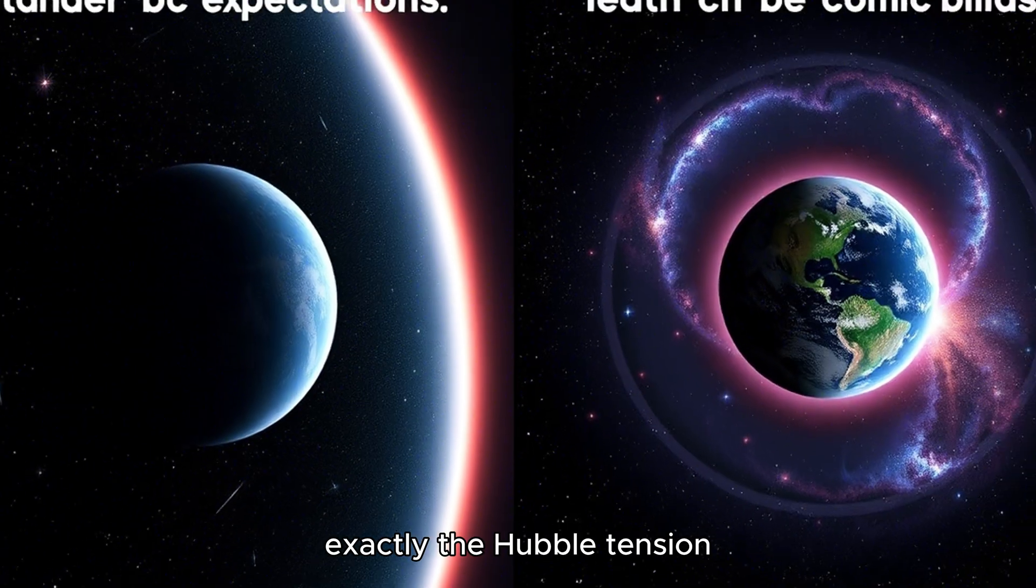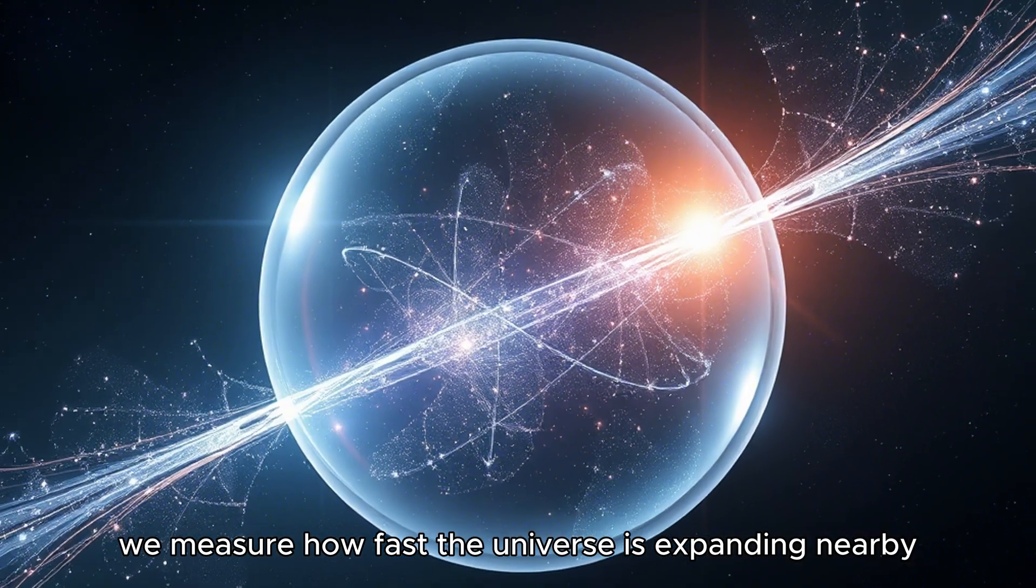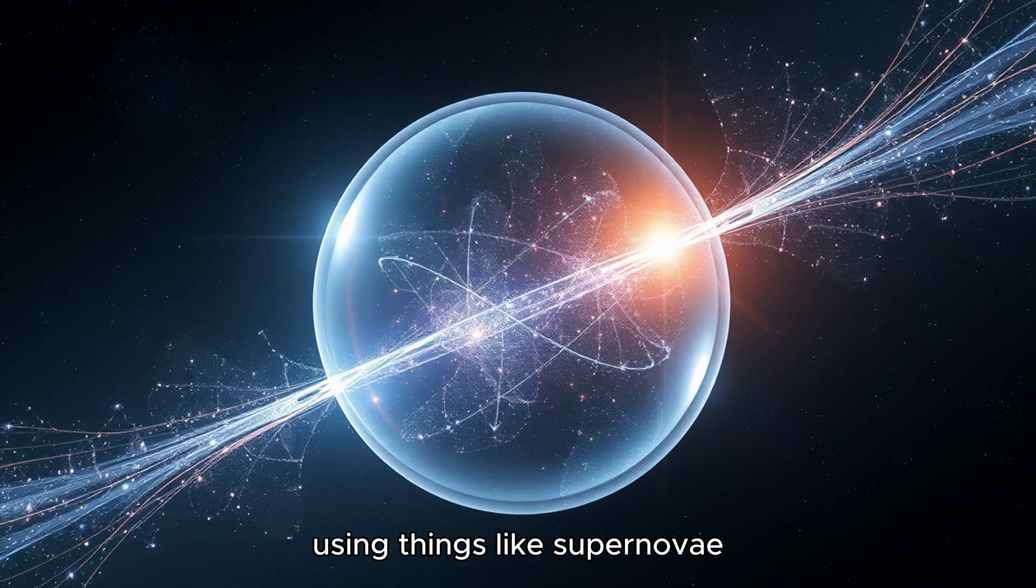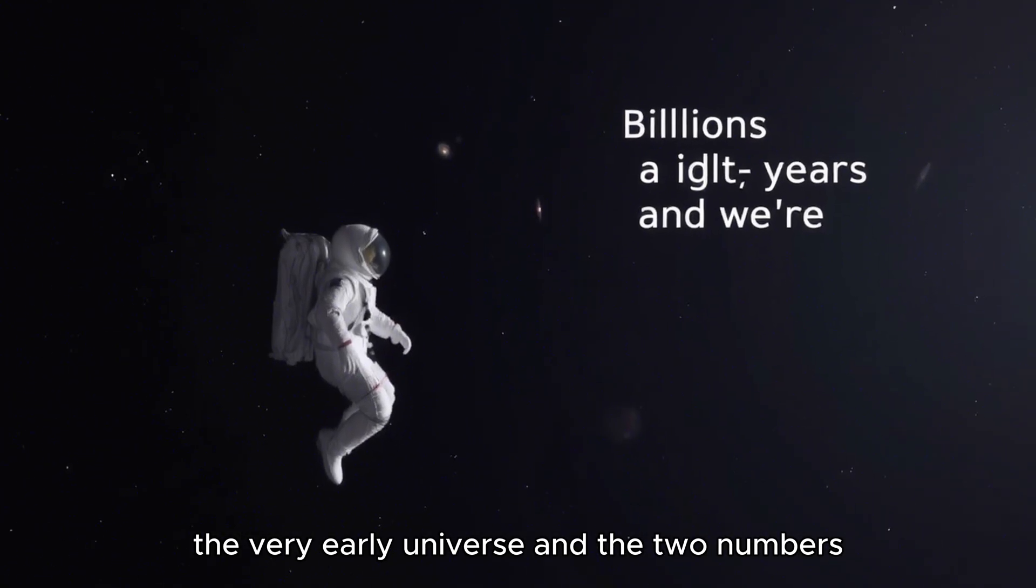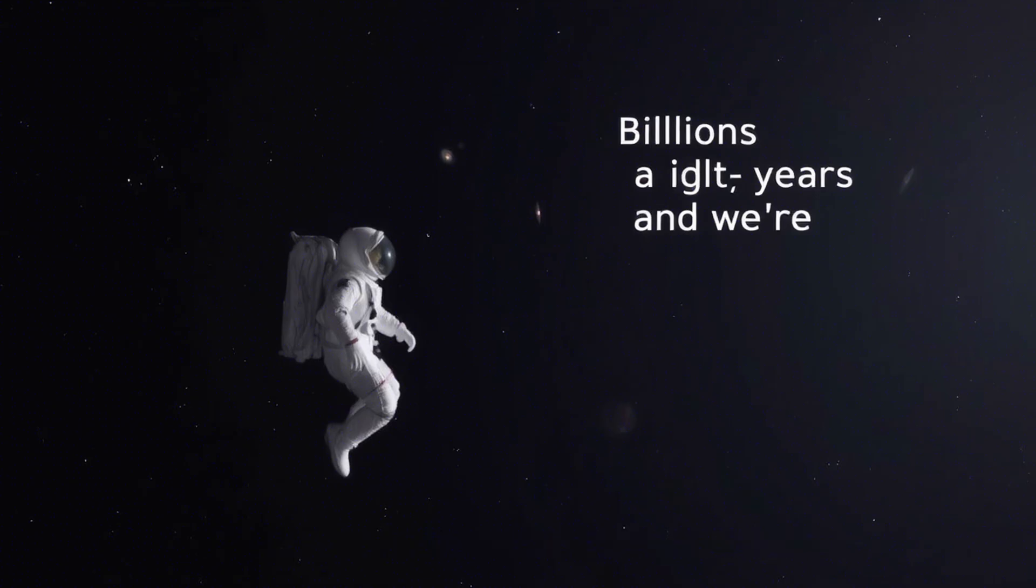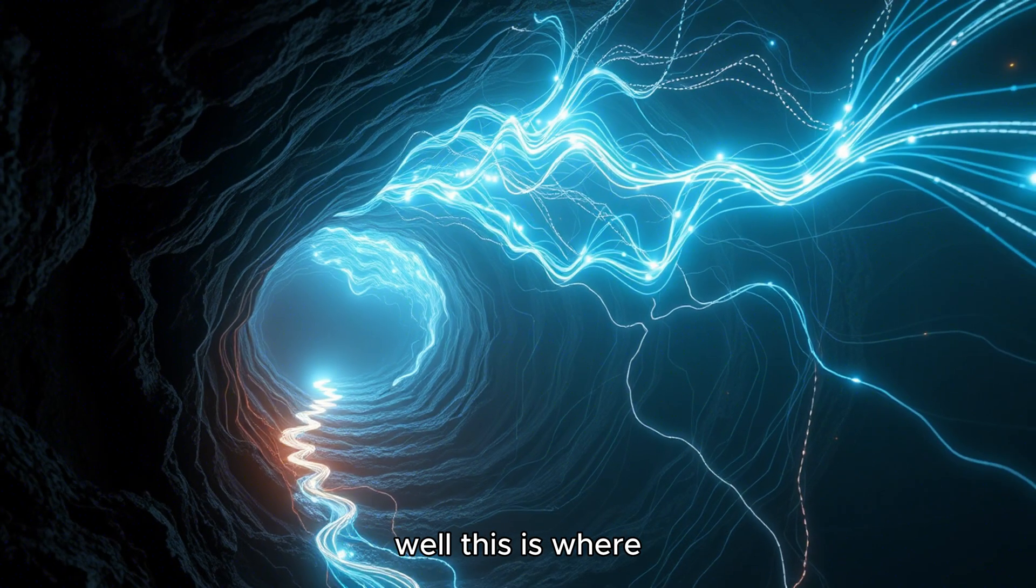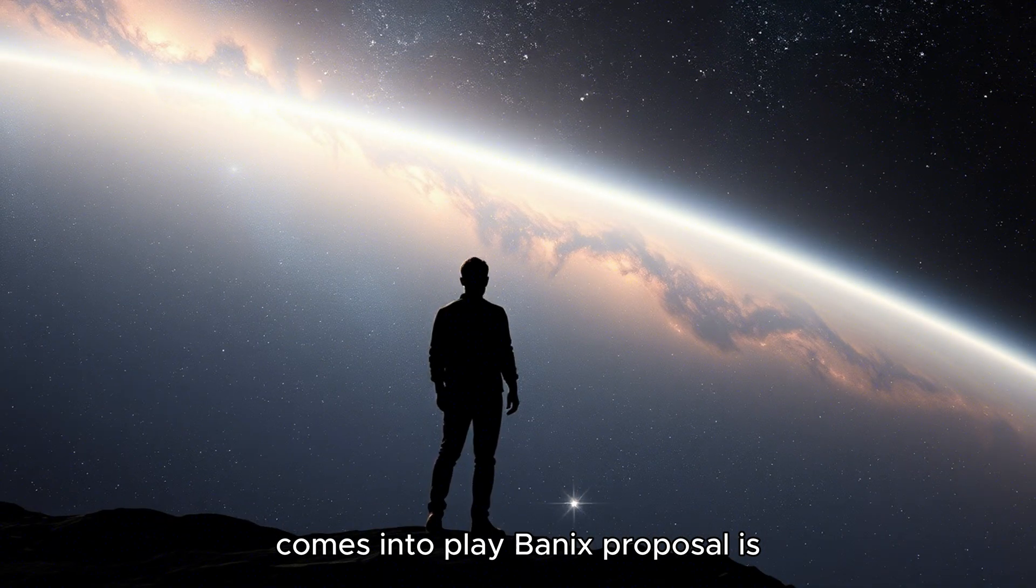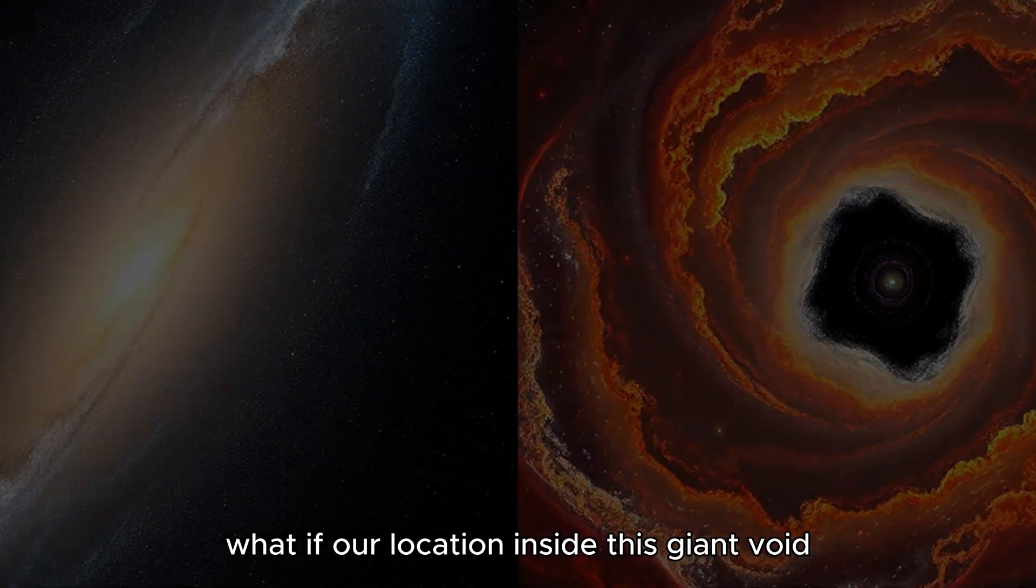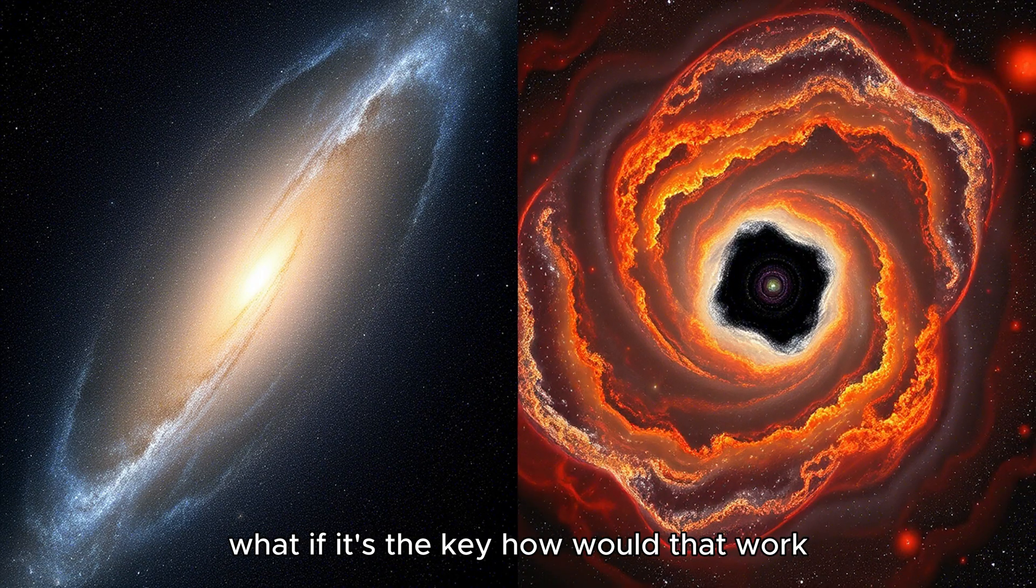The Hubble tension, it's a real headache for cosmologists. Basically, we measure how fast the universe is expanding nearby using things like supernovae, and then we calculate the expansion rate based on the CMB, the very early universe. And the two numbers, they just don't agree. They don't match up. So where does the void come in? This is where a really fascinating study by Indul Gannik comes into play. Bannik's proposal is, what if our location inside this giant void is the reason for the disagreement? What if it's the key?